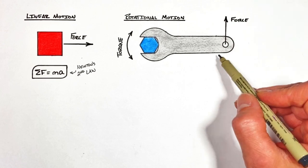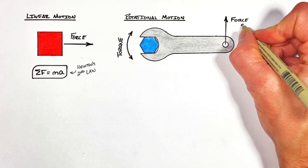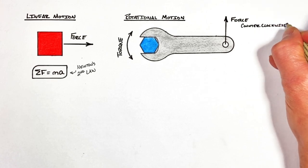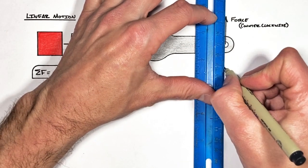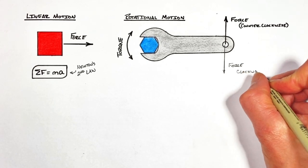Now the way I've drawn this, this force acting up on the end of the wrench would make this whole wrench rotate counterclockwise. But if I was to push on the wrench in the opposite direction it would make the wrench rotate clockwise.